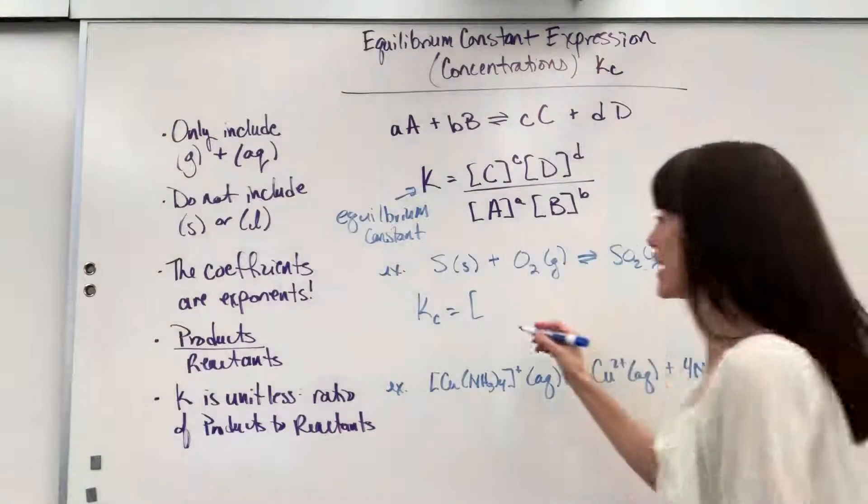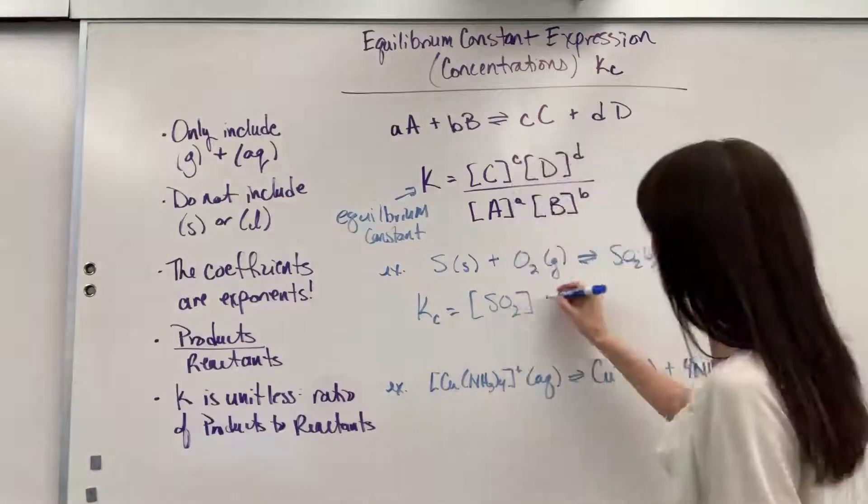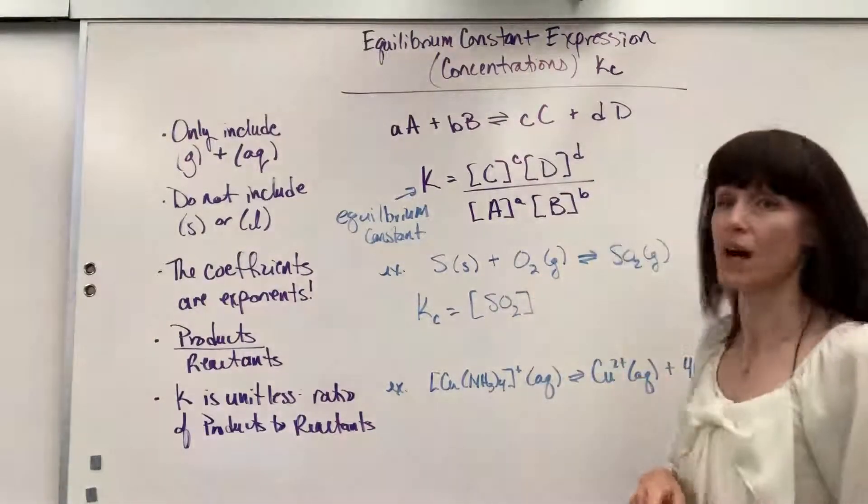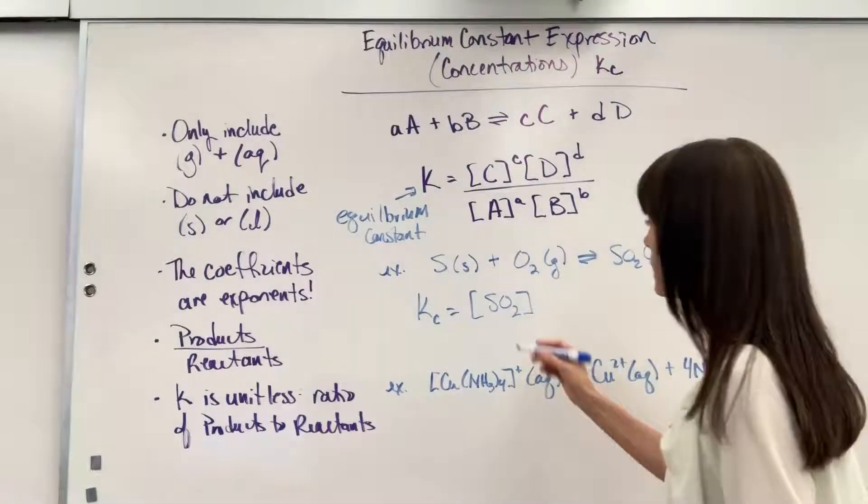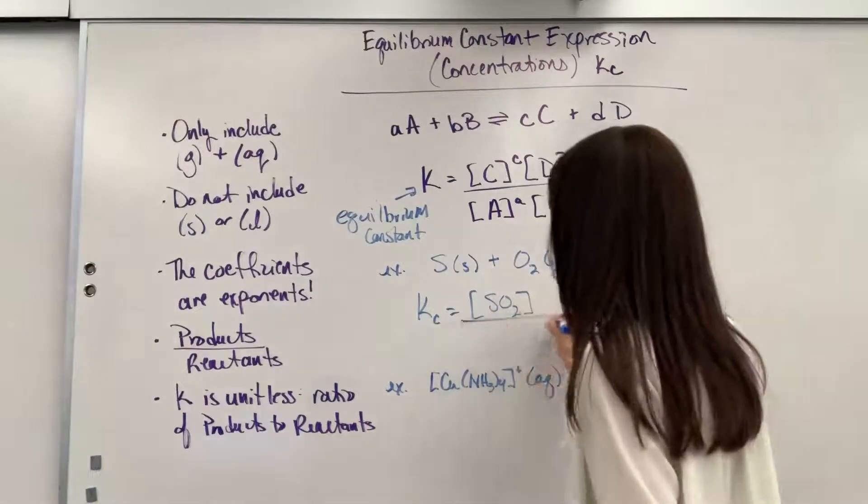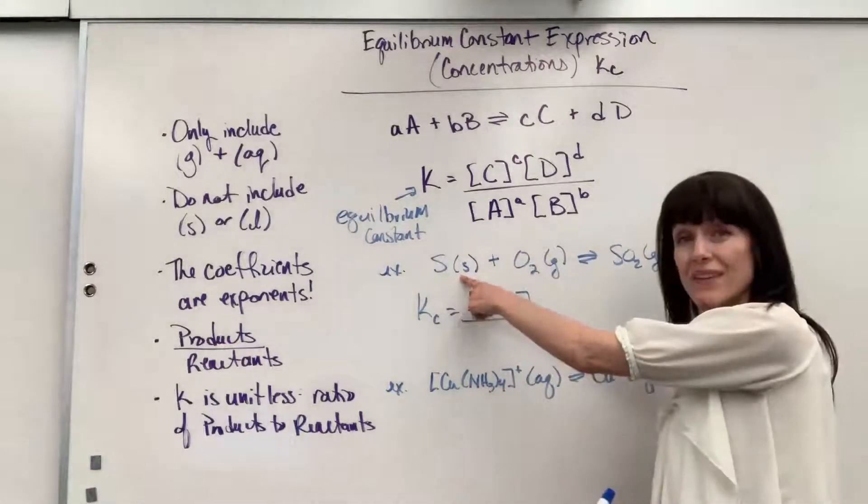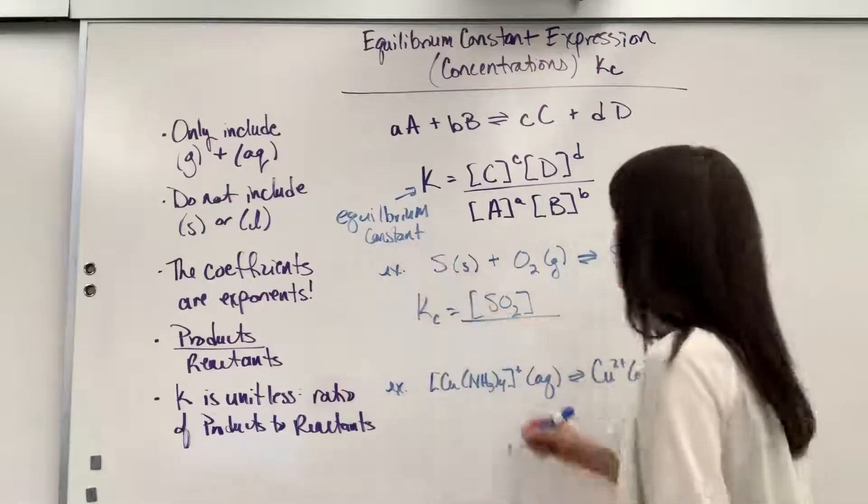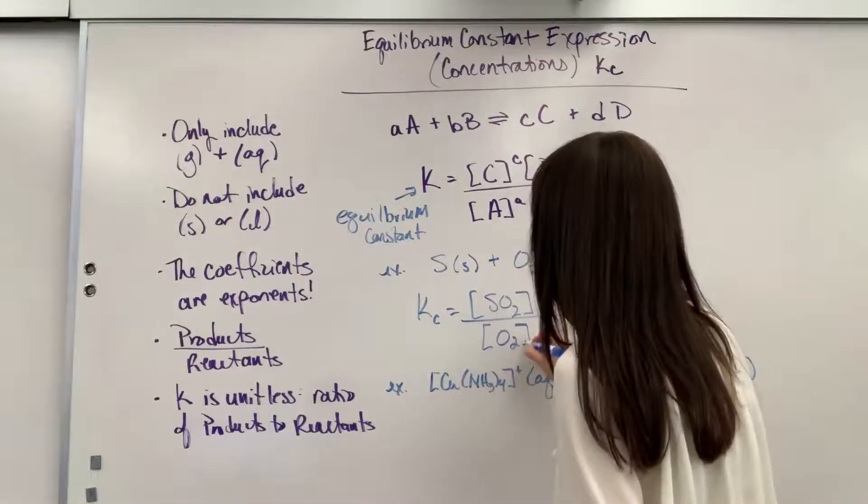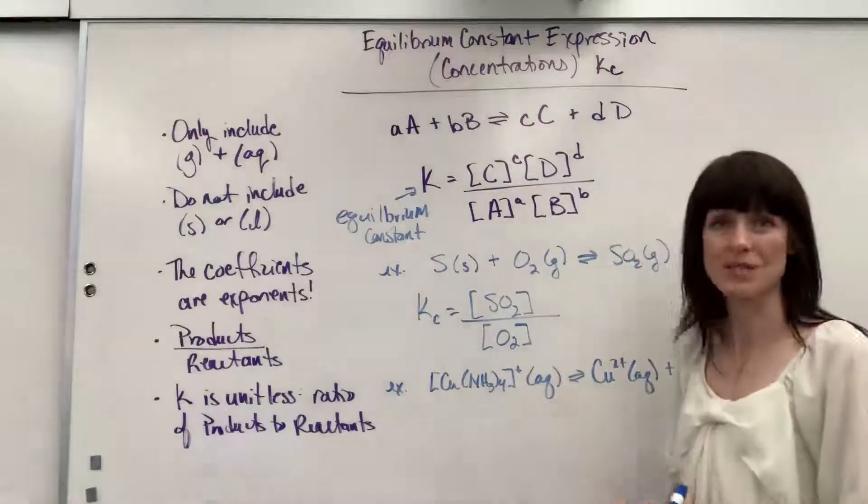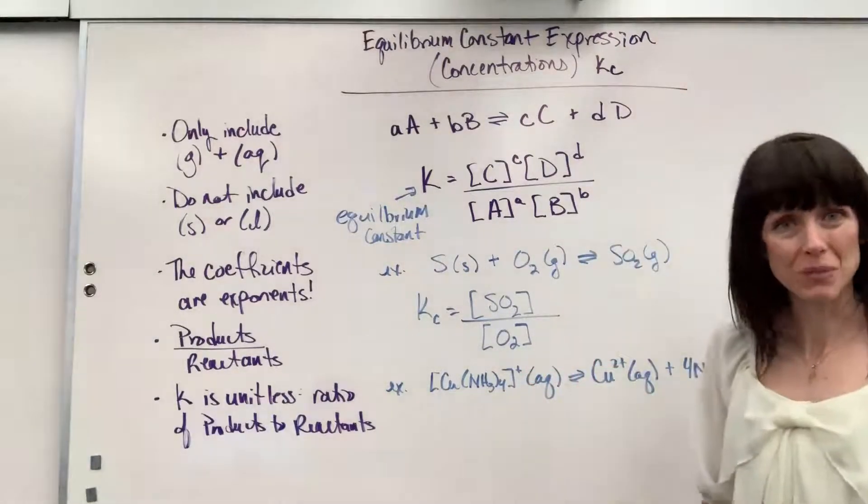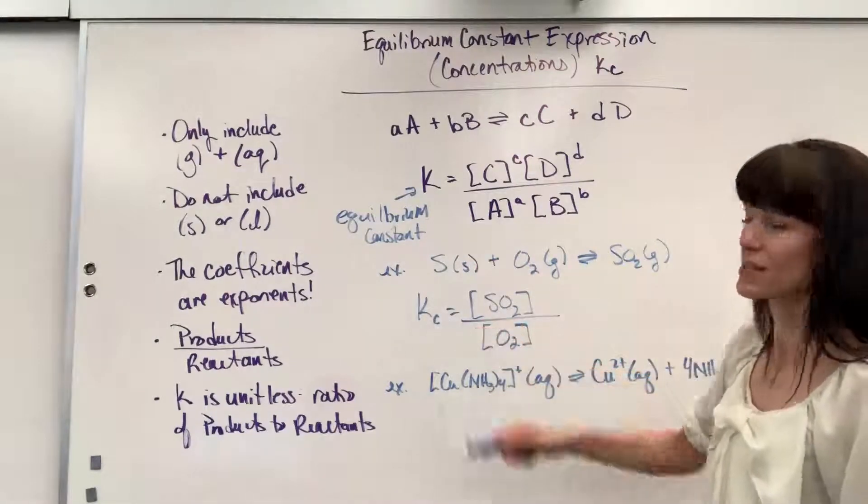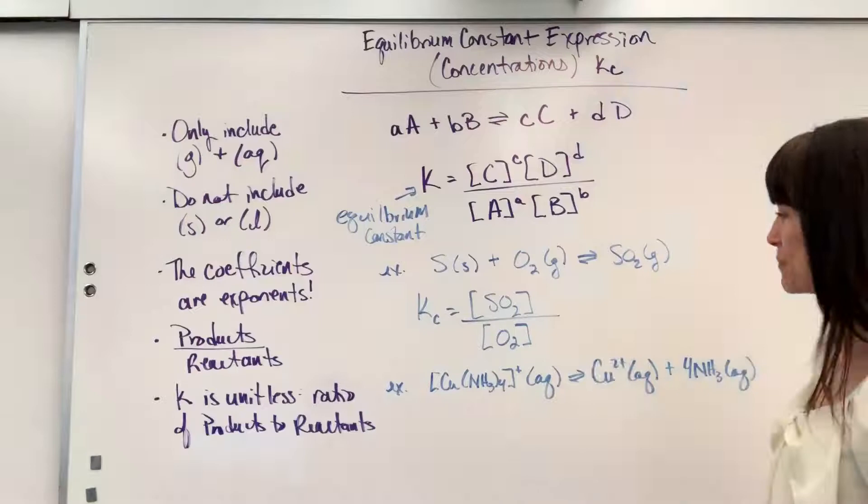So, I first look at my products. SO2, and it's a gas. Great. I can include that. So, that would be SO2. The coefficient is a one. So, you can write a one, or you could leave that off, and it's understood to be one. Inherently, you know that that's a one. So, products divided by, look at my reactants. Oh, the sulfur, that's a solid. So, I can't include that. I don't use that at all. So, that will be divided by O2, which is also to the first power. And there we have it. That would be our equilibrium expression. The Kc, the equilibrium constant of the concentrations of these products and reactants.